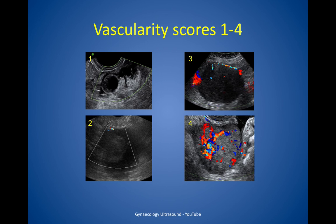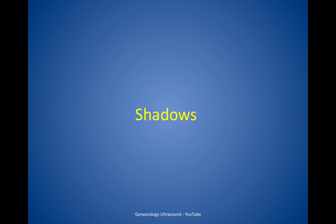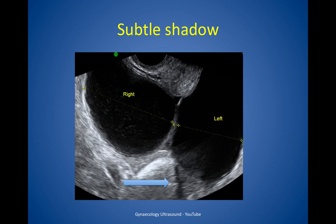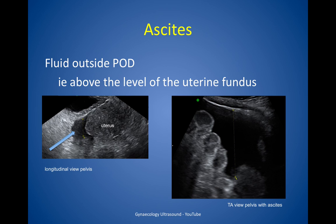Vascularity score 1 is no flow. Score 2 is just a little bit of flow when you've really had to look for it. Score 3 the flow is just present, and score 4 is strong flow in one particular area. This is quite subjective but you'll see how useful this turns out to be.